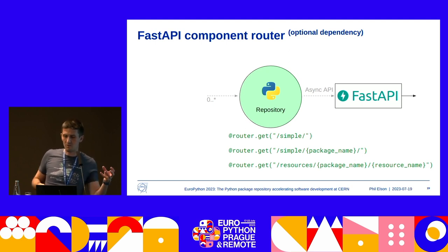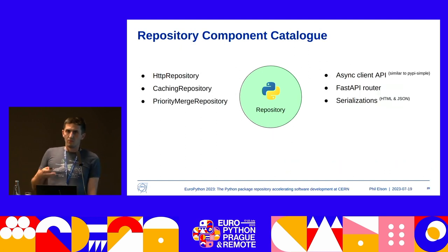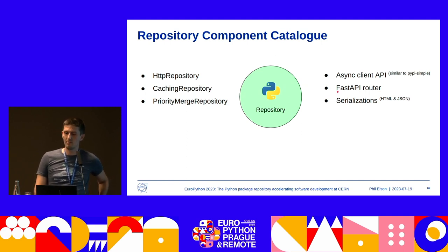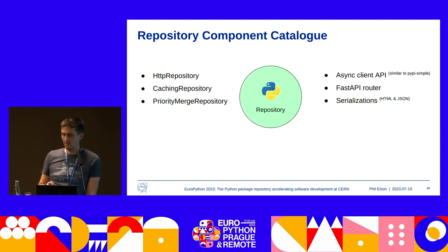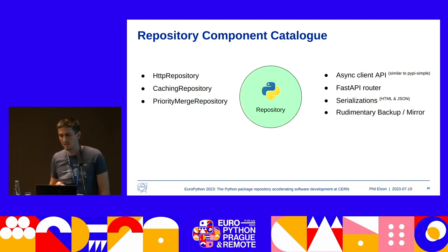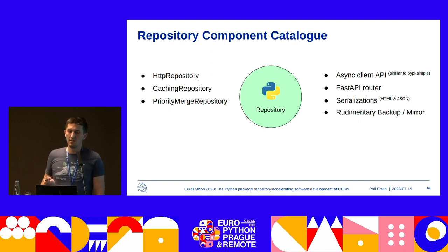We're beginning to build a little catalog: the ability to access HTTP repositories, cache repositories, merge repositories, an async API, a router in FastAPI, and the ability to serialize into HTML and JSON. Next, we wanted to build some kind of backup for our Nexus instance. We used our async client API to do that — it's about 10 lines of code, nothing special. It just backs up into a PEP 503 compatible directory structure.